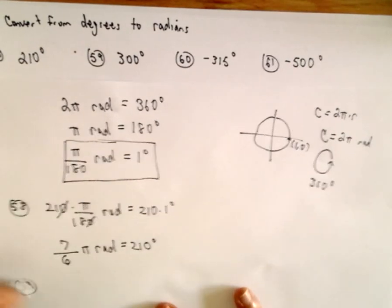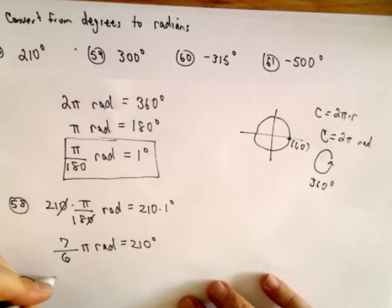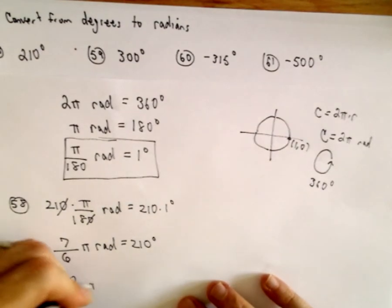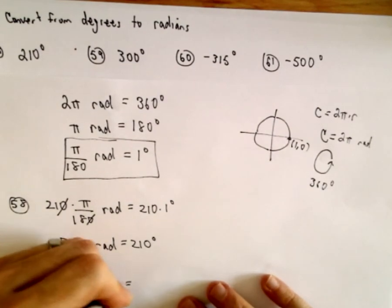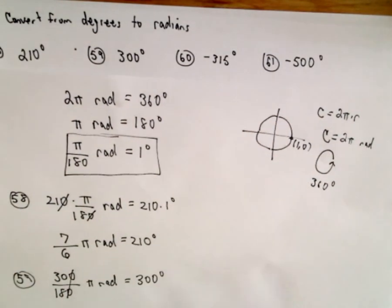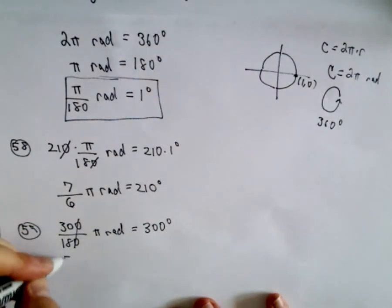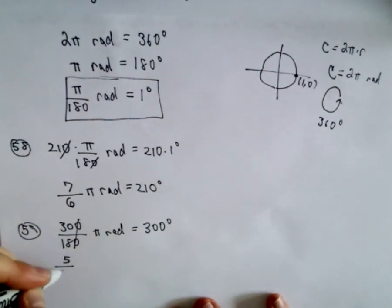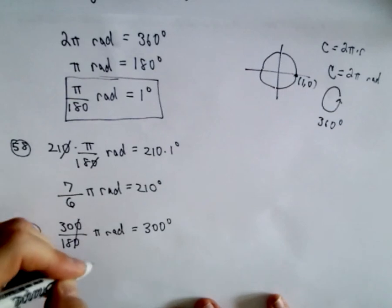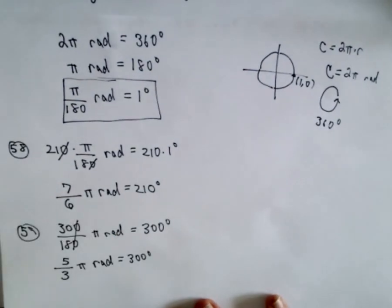And the other examples are going to be the exact same way. So 59, if I multiply both sides by 300, I would have 300 over 180 pi radians equals 300 degrees. Well, again, I could cancel out the zeros. 6 will go into both of those. 6 will go into 30 five times. 6 will go into 18 three times. So 5 thirds pi radians will be the same thing as 300 degrees.